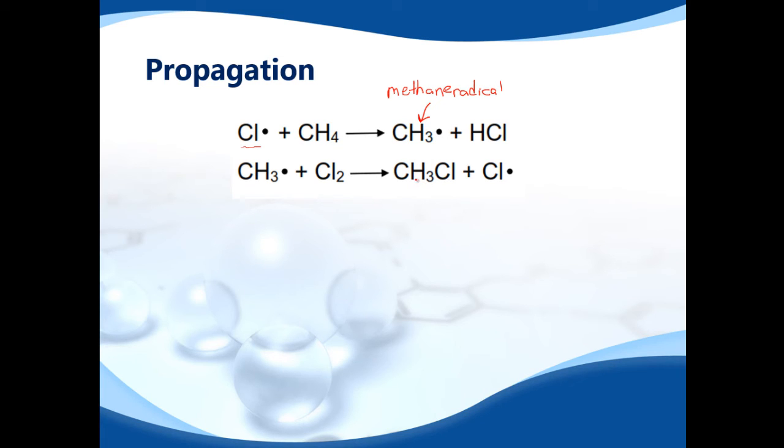The important point is you also produce another chlorine radical, and that can start the reaction all over again. So this is called a chain reaction.